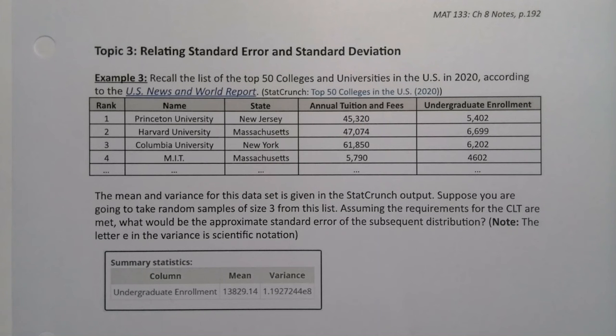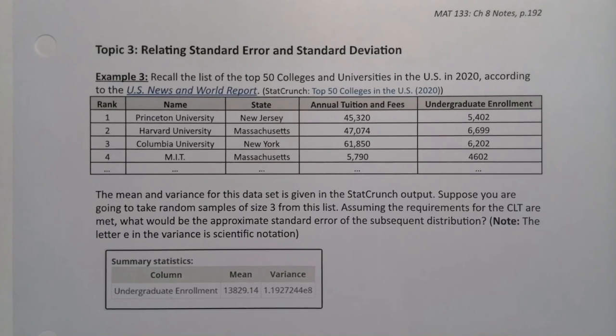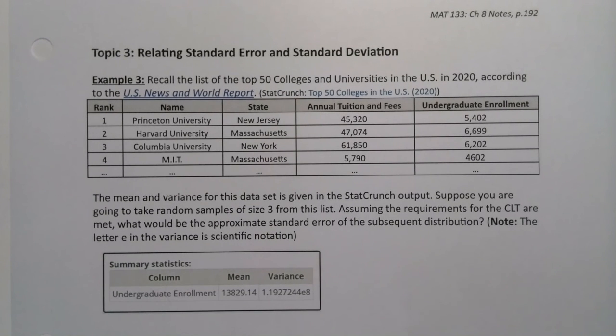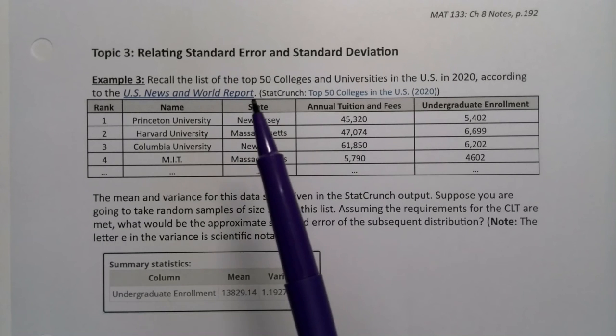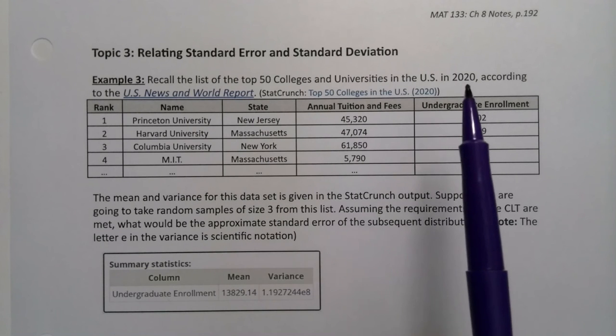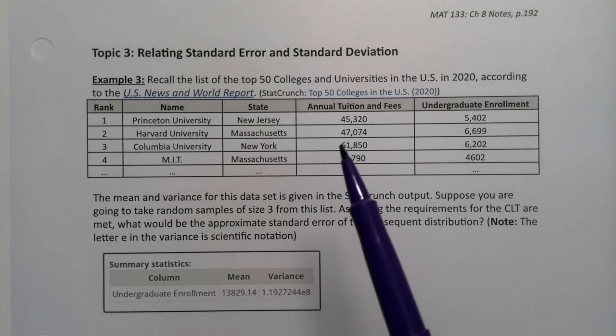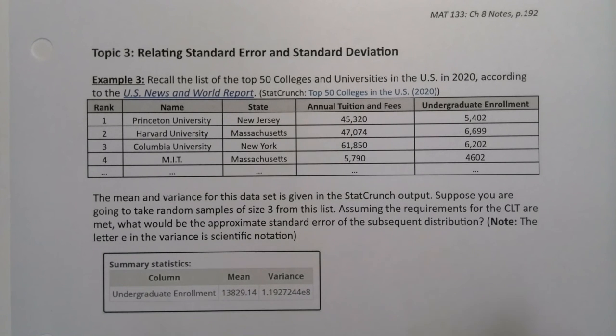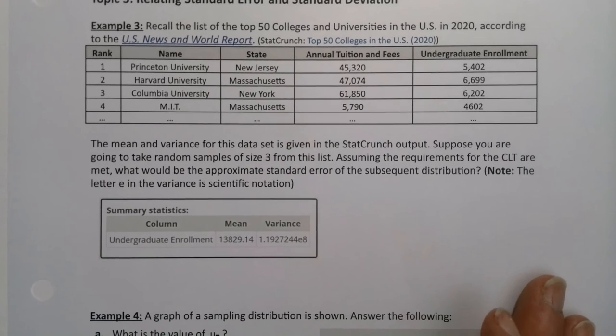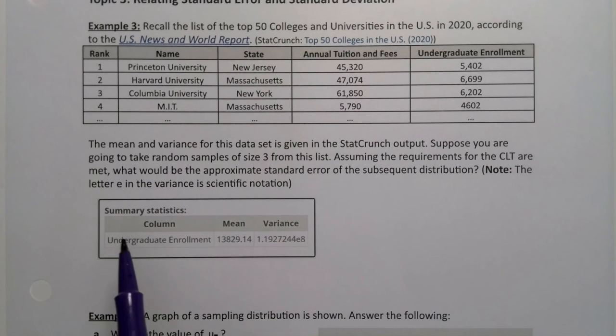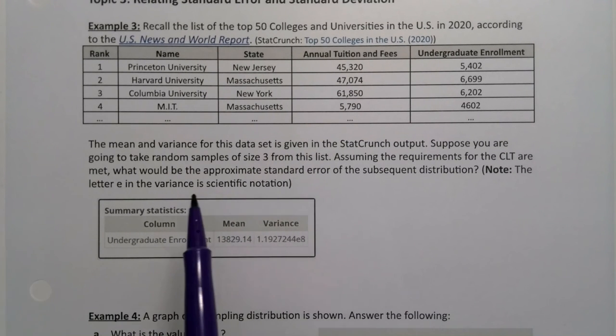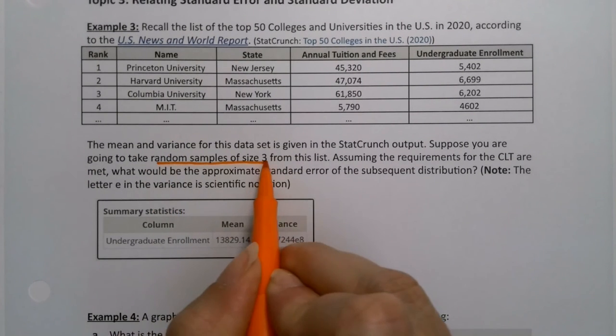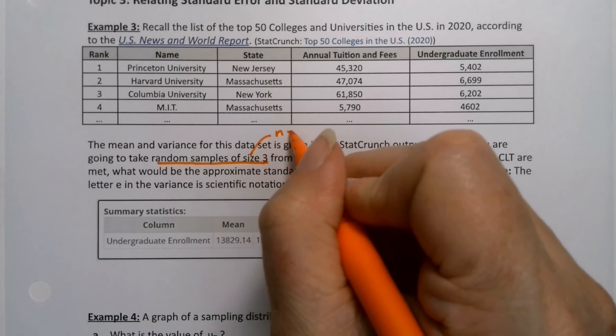We want to spend a little bit more time with the formula for standard error because it's a good one and we use it a lot. So let's look at a couple examples. We have the list of the top 50 colleges and universities in the United States in 2020 according to the US News and World Report. Of course these are real data and you're welcome to look them up on StatCrunch.